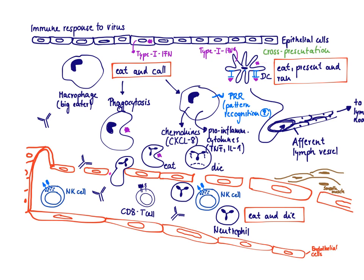Our second guard in the tissue is the dendritic cell. The slogan of the dendritic cell is 'eat, present, and run.' It is also a very good phagocytic cell and will respond to the virus via its pattern recognition receptors with the production of type 1 interferon. Besides infected epithelial cells, dendritic cells are also a very important source of type 1 interferon.